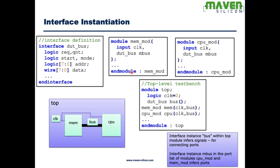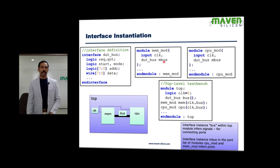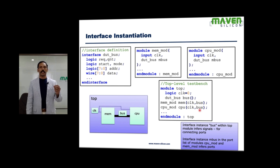Look at how we define the lower-level modules using interface. For the memory module, clock is defined as a separate input port since it is not included in the interface. Then dot_bus interface with instance mbus is included — this mbus instance creates all the ports. Similarly, cpu_mod has input clock and uses the same dot_bus interface with instance mbus. You no longer need to make connections signal by signal or port by port.